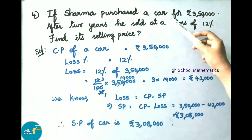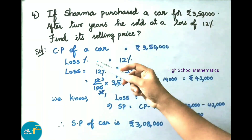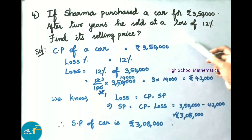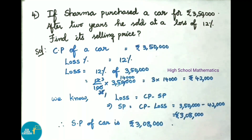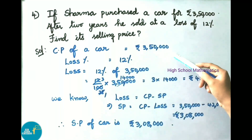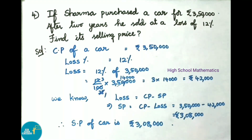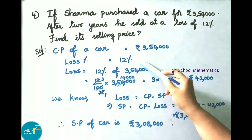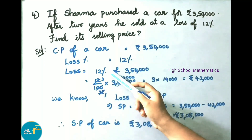Question number 4: Sharma purchased a car for 3,50,000 rupees. After 2 years he sold it at a loss of 12 percent. Find its selling price. Solution: cost price of car is 3,50,000 rupees, loss percentage is 12 percent. Let us find the loss.